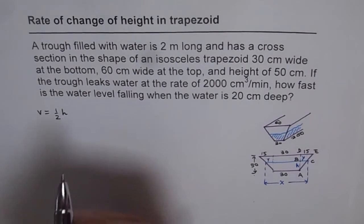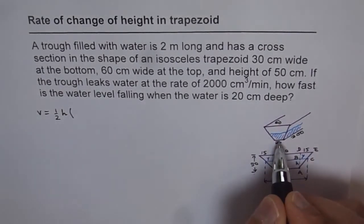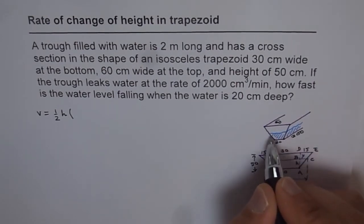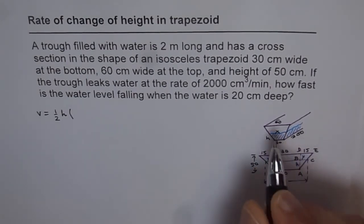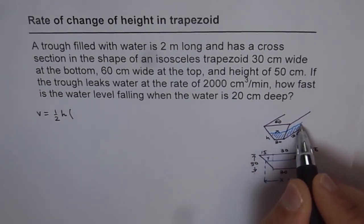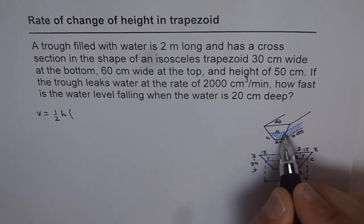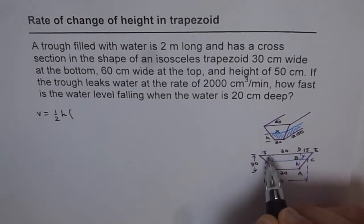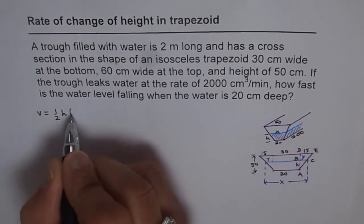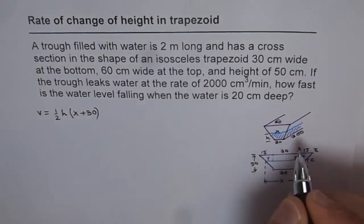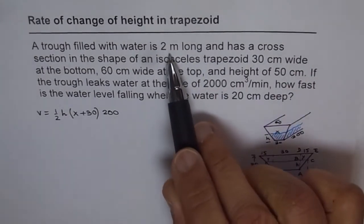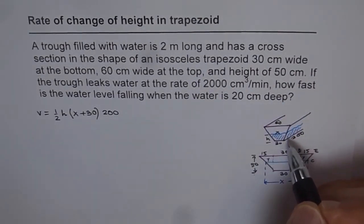Let's assume the water level is at height h. At this time the top width will be x. So we are looking at the water volume shown in blue in the trough. The top edge is x centimeters, the bottom is 30 centimeters, and the height is h. So volume is half of h times (x + 30), times the length which is 200 centimeters — since 2 meters equals 200 centimeters.